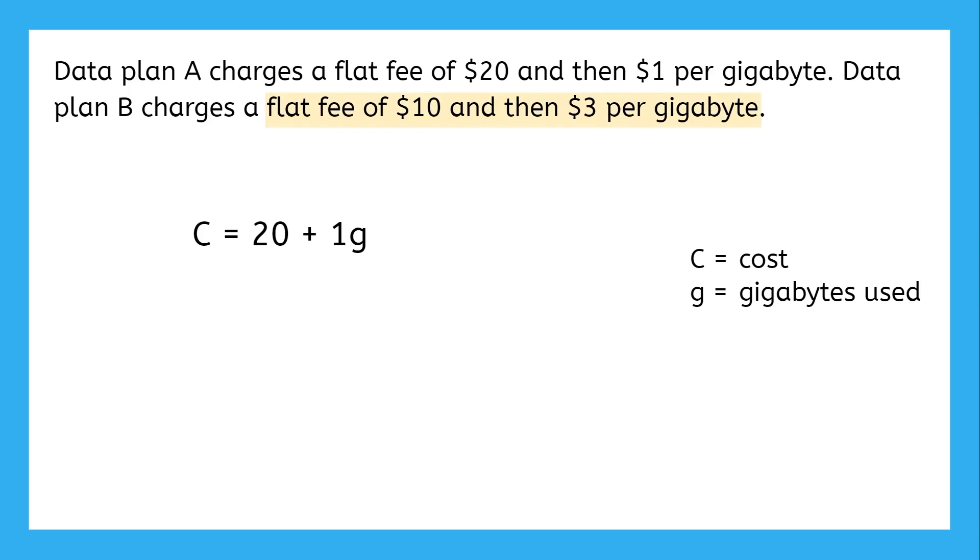Now for data plan B, a flat fee of $10 plus $3 per gig. That will also be a slope intercept form. So now that we've got two equations, one for each data plan, but they use the same variables with the same meaning.